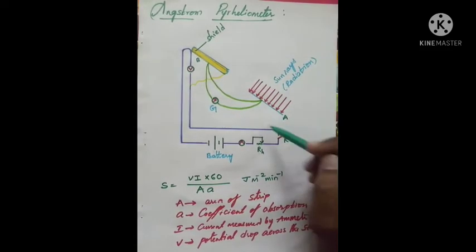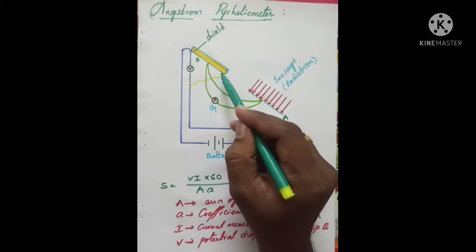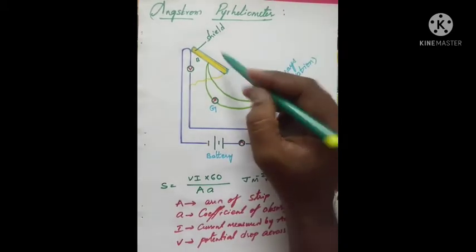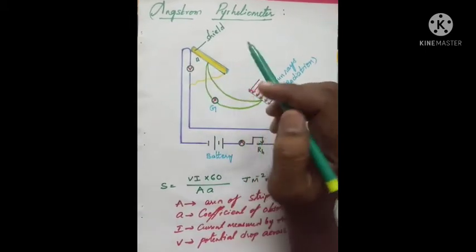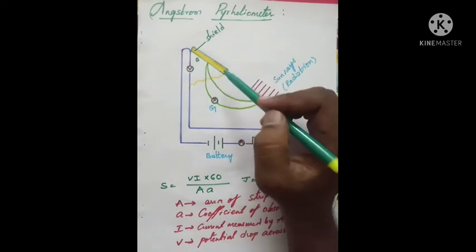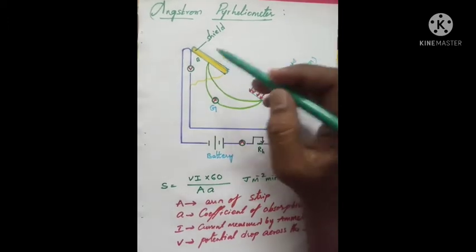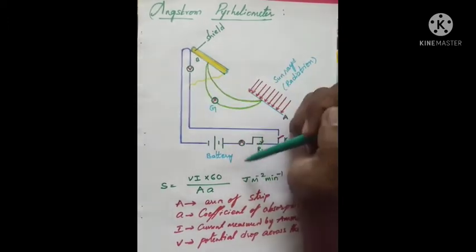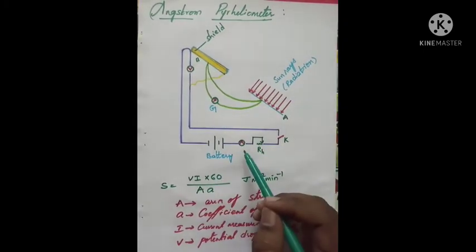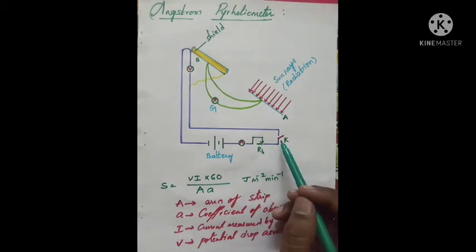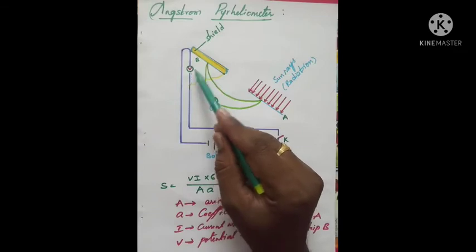Strip B is shielded by a screen S. Strip B is heated electrically — it is connected to a circuit containing a battery, ammeter, rheostat, and key. With the help of a voltmeter, we can measure the voltage drop across strip B.